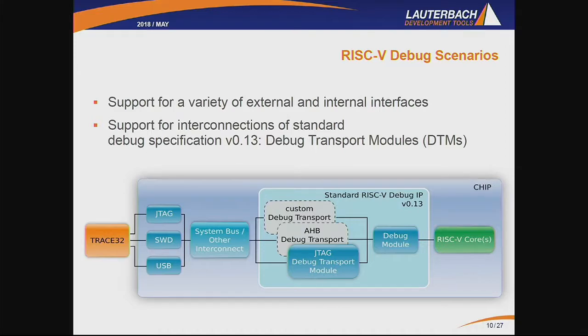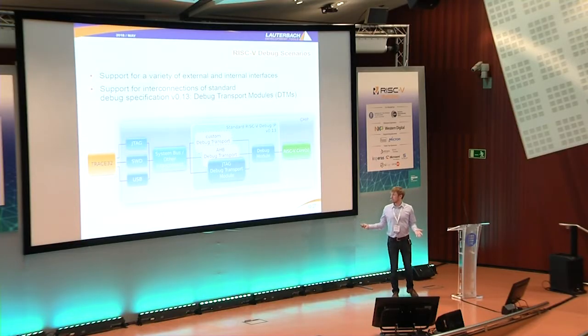For example, you have a debugger connected via external pins of JTAG, serial wire debug, and we also support solutions that use USB as a dedicated interface for debug or even trace. Then there can be a system bus or some other means of interconnect — for example, an ARM core-side system. A lot of people are implementing this RISC-V debug IP and tend to just use what is standard, so they put the JTAG debug transport module right into this chip, possibly interconnecting to an ARM core-side system. That does work, but it's not very performant. We're working closely with system developers to find new solutions — for example, directly mapping the debug registers on an existing system bus, if available.